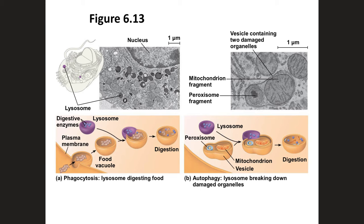Lysosomes are membrane-bound vesicles that contain digestive enzymes used to break down macromolecules. Lysosomes are formed within the cell and packaged by the Golgi apparatus. These digestive enzymes or proteins were made in the rough endoplasmic reticulum, went to the Golgi apparatus, and are then packaged in vesicles to be used when needed. They are also capable of destroying cells or foreign matter that the cell has engulfed in phagocytosis. Certain white blood cells that perform phagocytosis, such as macrophages, would have a lot more lysosomes than other cells.